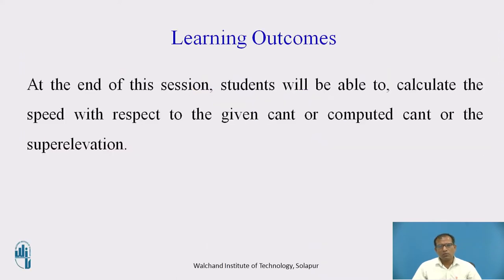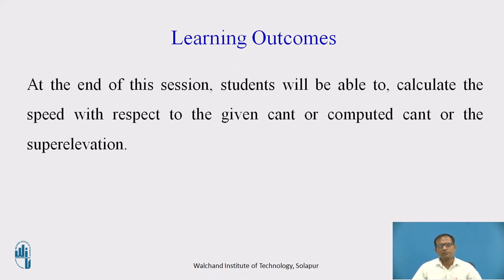The learning outcome of today's session: students will be able to calculate speeds with respect to the given cant, computed cant, or super elevation. In the previous session, we have seen the different types of speeds — the weighted average speed or equilibrium speed, the maximum sanction speed, and the maximum permissible speed allowed on a particular track.